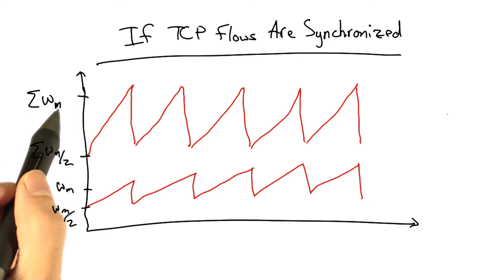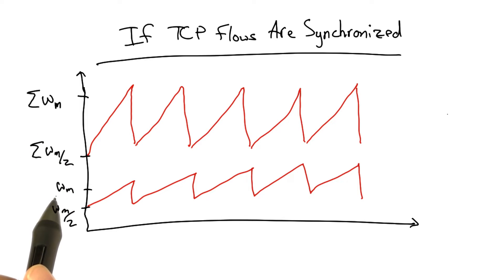Specifically, the number of packets occupying the buffer would be the sum of all of the TCP flows windows, rather than the window of any individual flow.